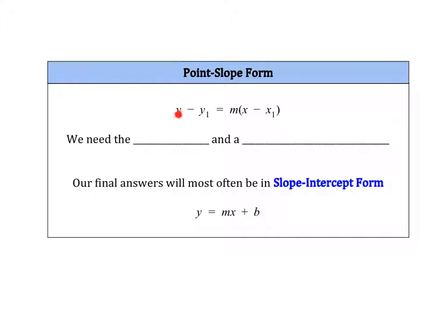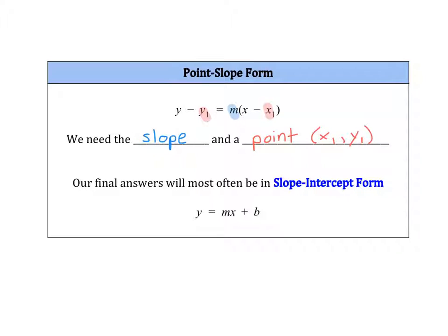Point-slope form looks like this: y minus y1 equals m times x minus x1. To use point-slope form we need two things: the slope, which is still represented by m — we will always need to know the slope — but this time, instead of needing the y-intercept, we can use any point on the graph. That point is represented by x1, y1. This can be any point on your line; it does not need to be the y-intercept, which is why this form is really useful.